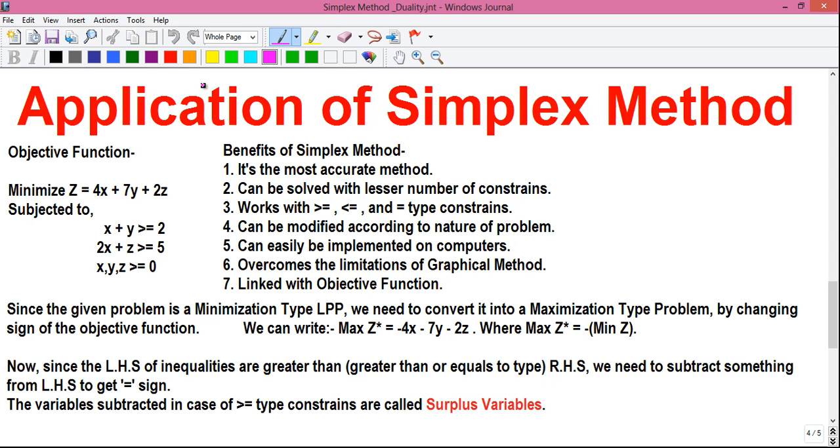This is the first part. So our objective function is minimize z equals to 4x plus 7y plus 2z subjected to x plus y greater than equals to 2, 2x plus z greater than equals to 5 and x, y and z all greater than or equals to 0. They are called non-negative constraints. Their value can be 0 or positive only, cannot be negative.